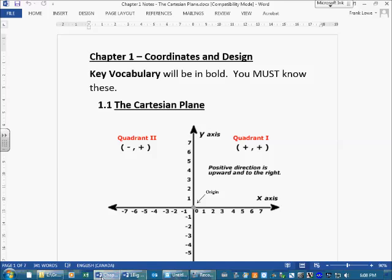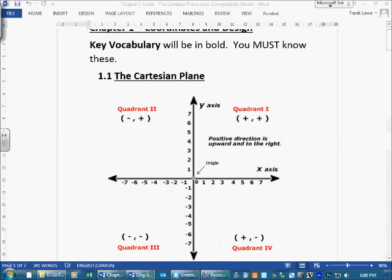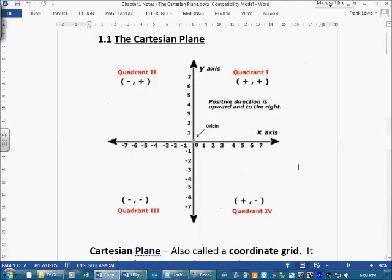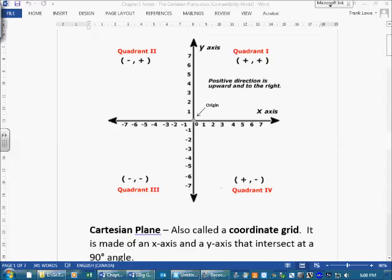I'll just give you a quick peek at this stuff. These are some things that you're going to be able to do. Once we're done, label all the quadrants, the parts of the graph, and where positive and negative numbers lie.